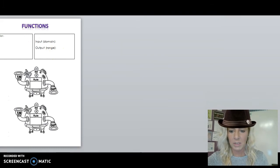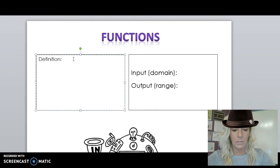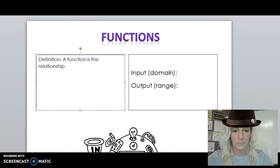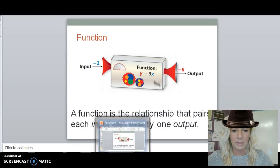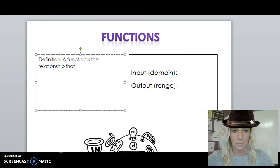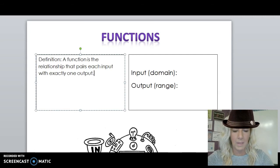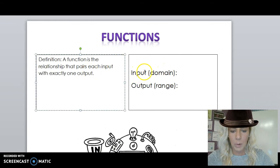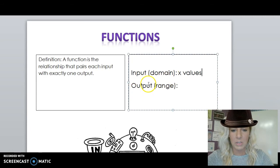So on your graphic organizer, let's fill in that section. A function is the relationship that pairs each input with exactly one output. If you need to pause this video to write that down, you can. And then our domain, or input, is our x values, and our output, or our range, is our y values. Domain and range are terms that you'll hear a little bit later on. For now, I want you to focus on input and output.